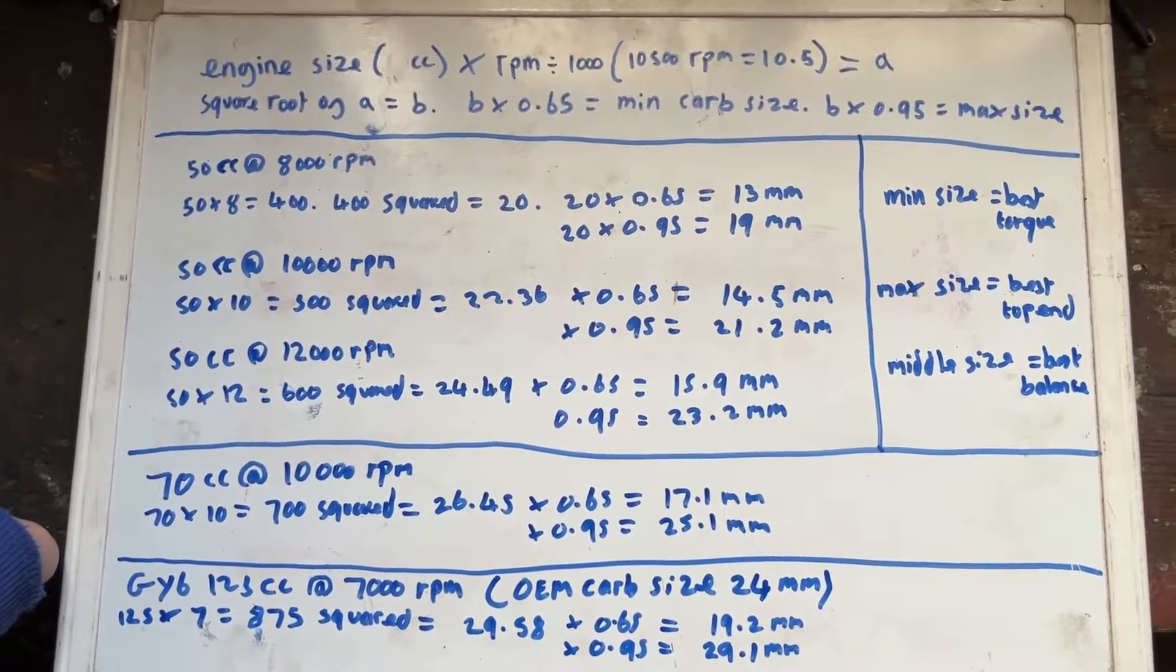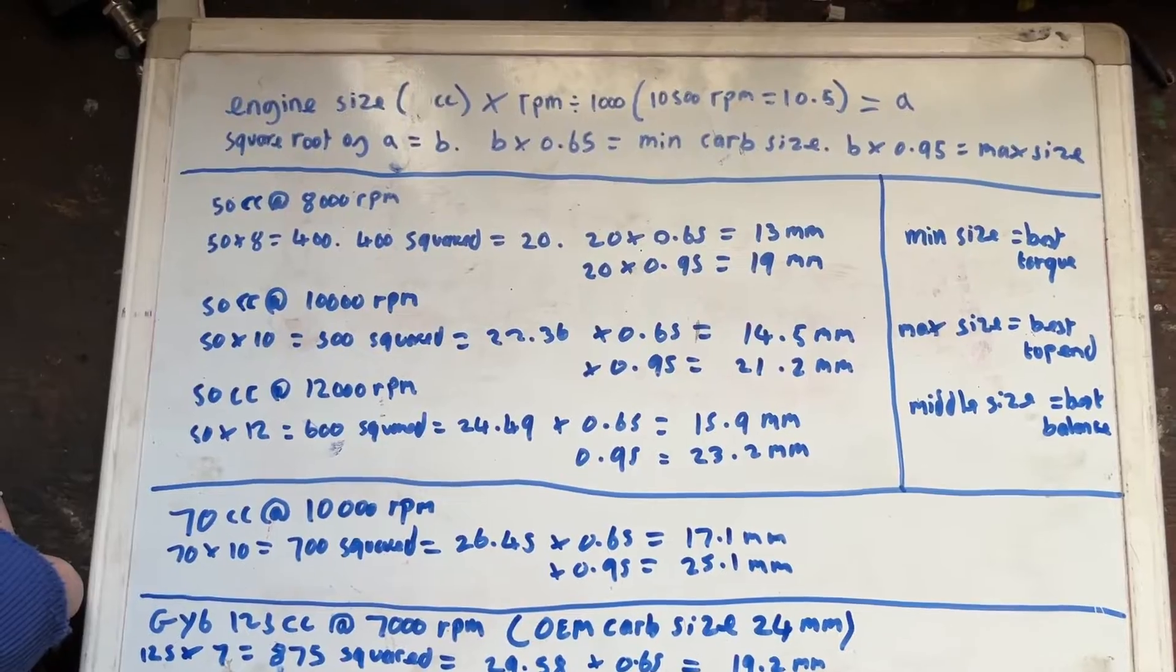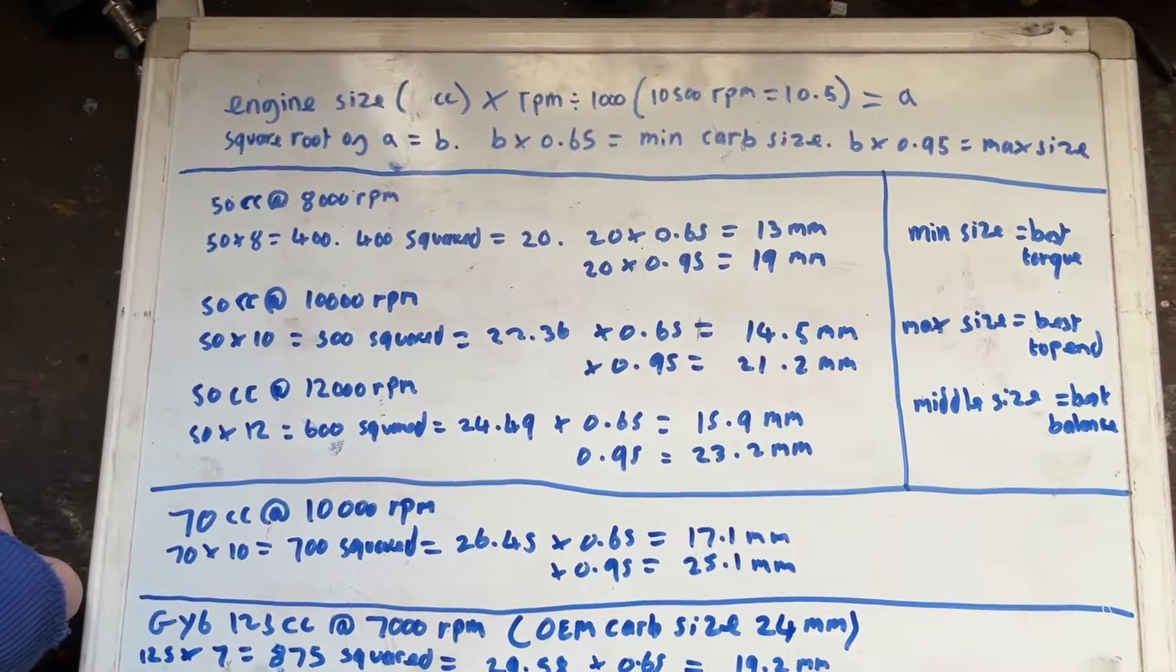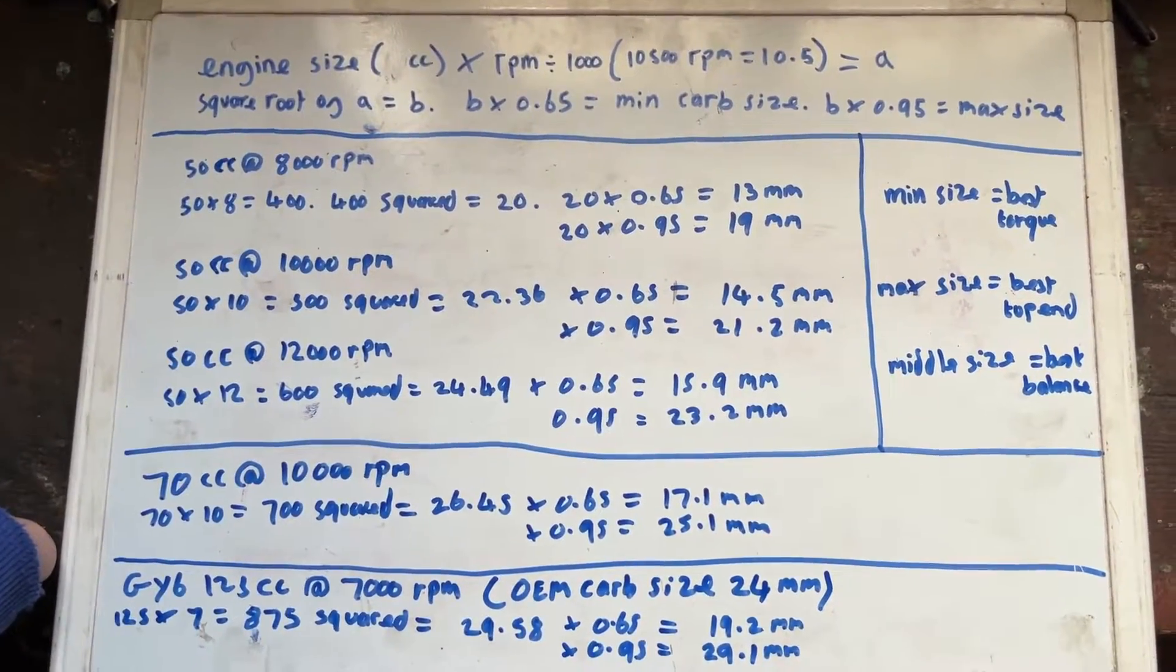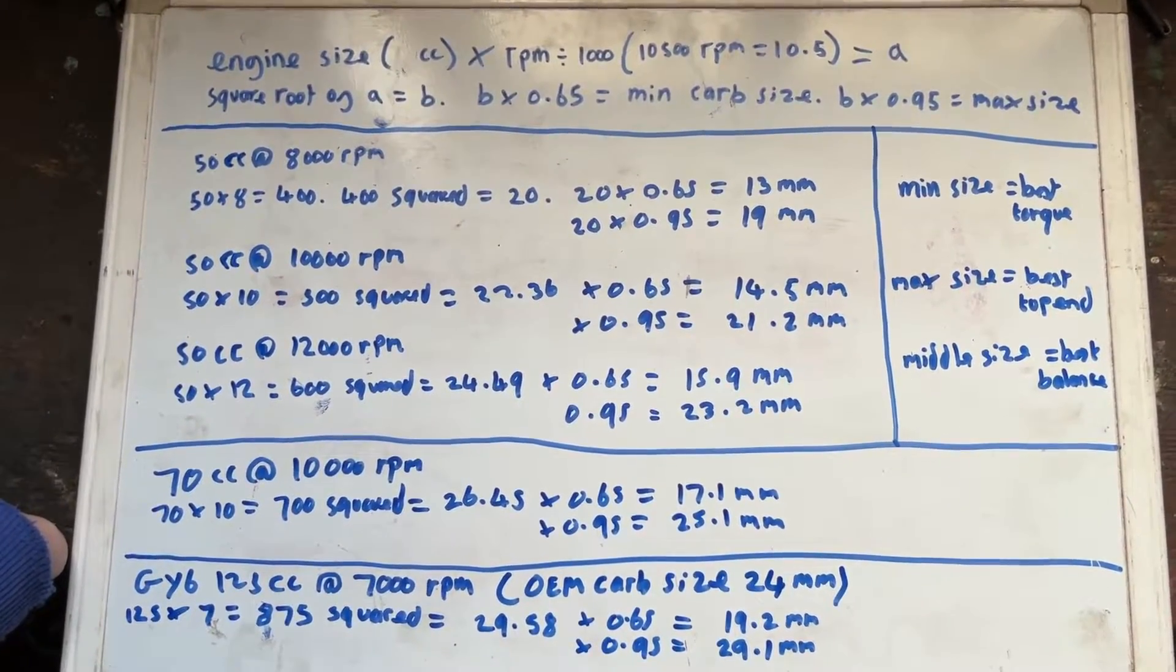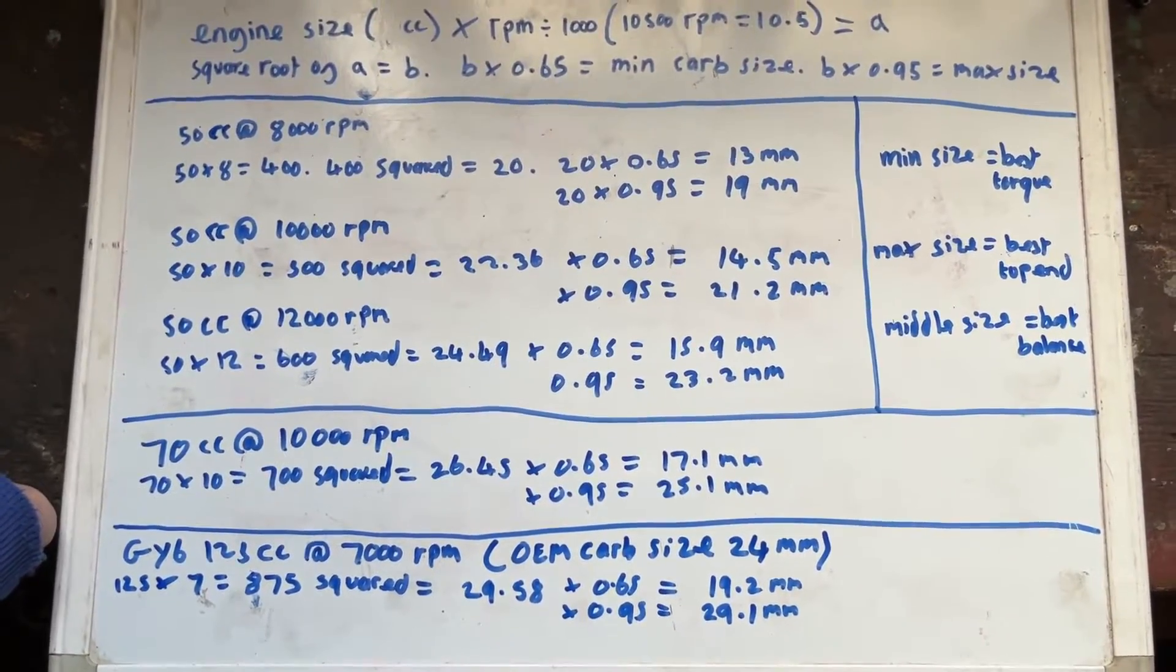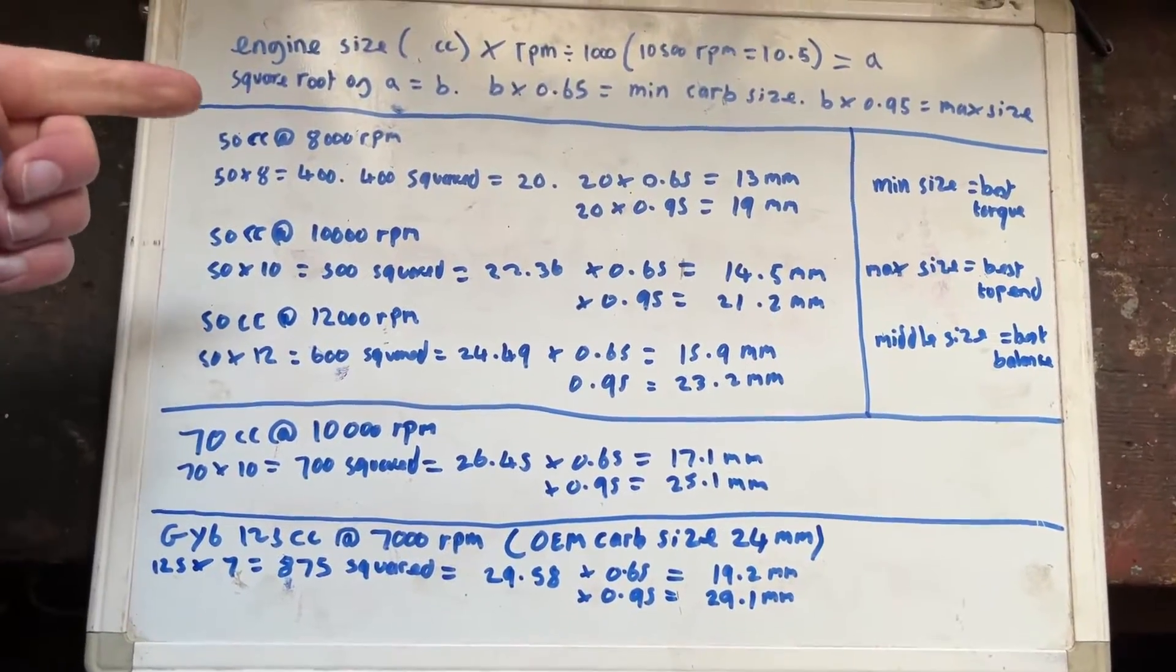So for example with Polini, some of the road sport kits will be revving something in the region of 10,000 RPM, where their racing cylinders will be revving up like 12,000, 13,000, maybe more. I don't know without looking at the website but you can usually get that information from them.